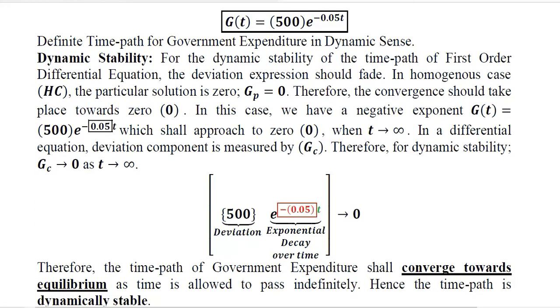Now we need to shed some light on its dynamic stability. Here the particular integral is equal to 0 because the value of b is 0, and b over a would become 0. So we are left only with the complementary function, and we have to look for the sign of the exponent, which shows a negative value. That will cause exponential decay over time.